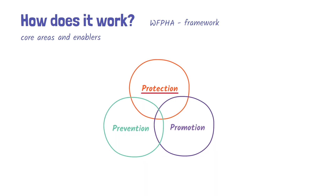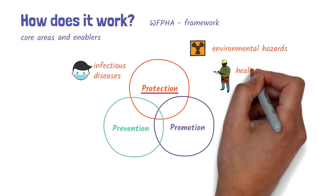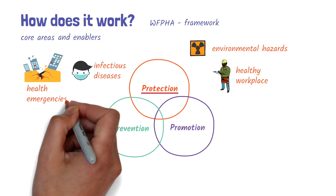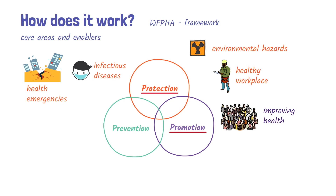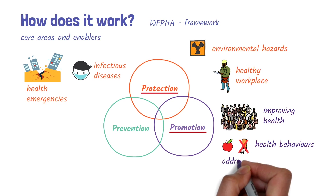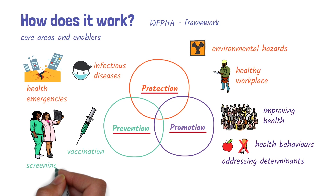Protection is about protecting the health of the population. This includes controlling infectious diseases, managing environmental hazards, ensuring a healthy workplace, and managing health emergencies. Promotion is about improving the health of the population. It covers a broad range of activities that not only focus on the individual, such as promoting health behaviors over a life course, but also focuses on addressing the determinants of health. Prevention is about preventing health issues before they occur. It includes activities such as vaccination and screening.